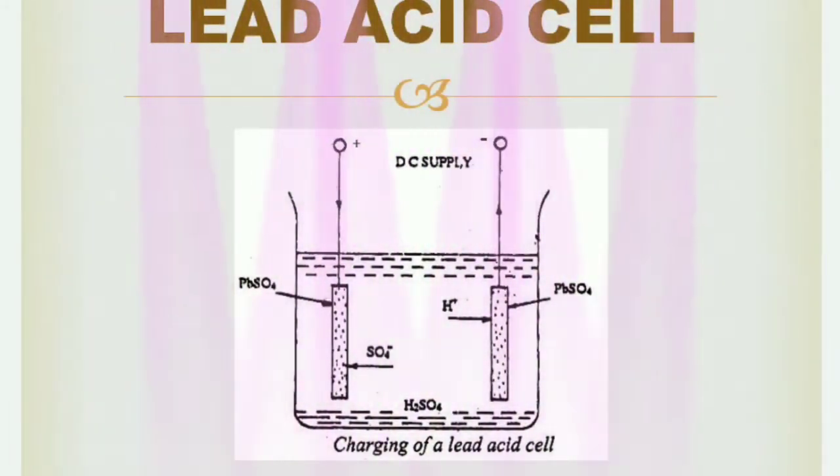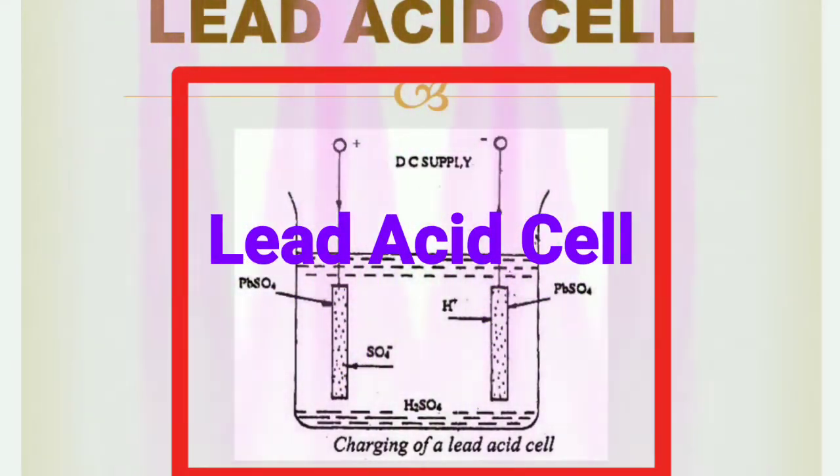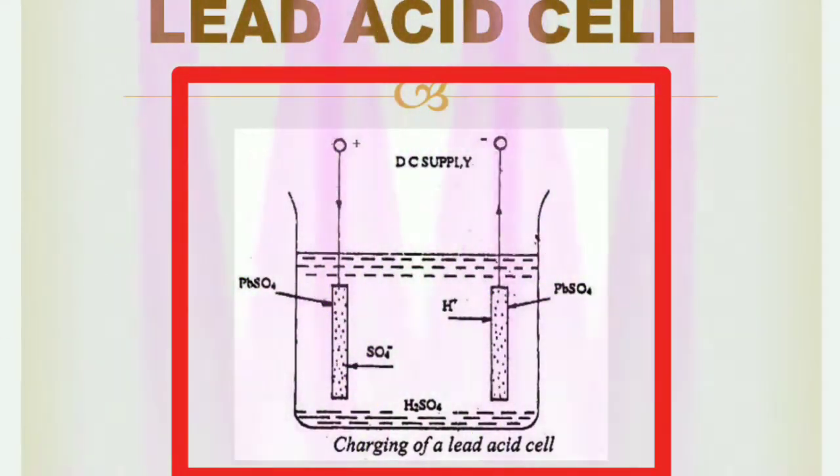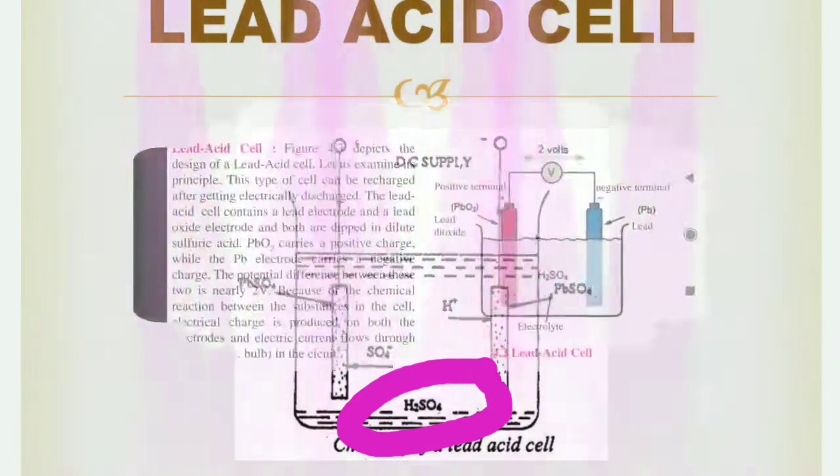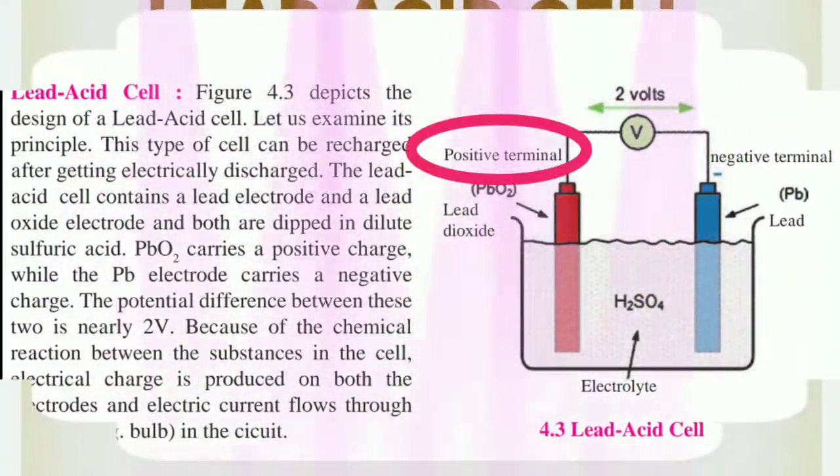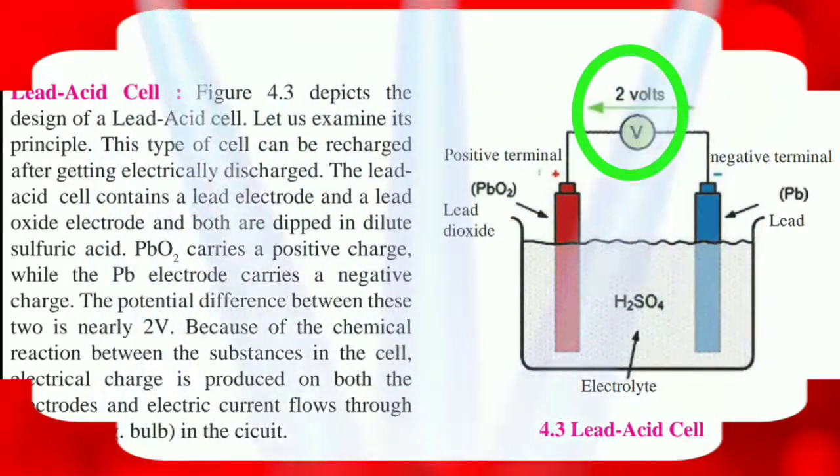Let us move towards lead-acid cells. The lead-acid cells contain a lead electrode and a lead oxide electrode. And both are dipped in dilute sulphuric acid i.e. in H2SO4. PbO2 carries a positive charge while the Pb electrode carries a negative charge. The potential difference between these two is nearly of 2 volts.